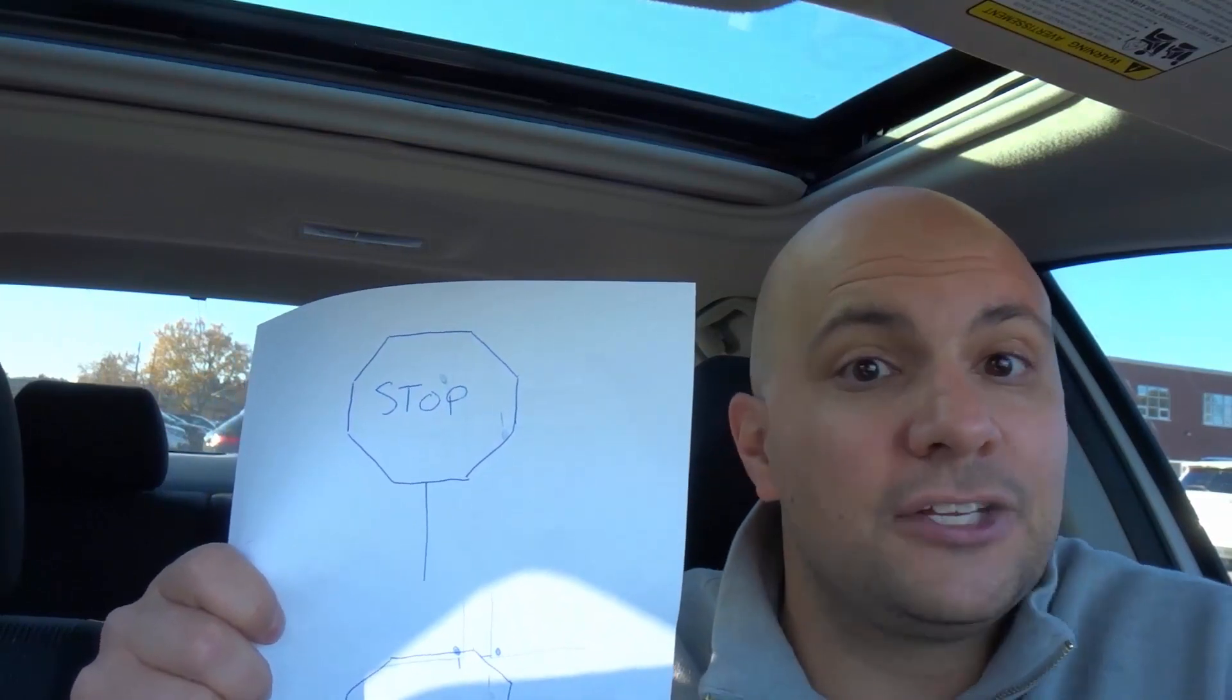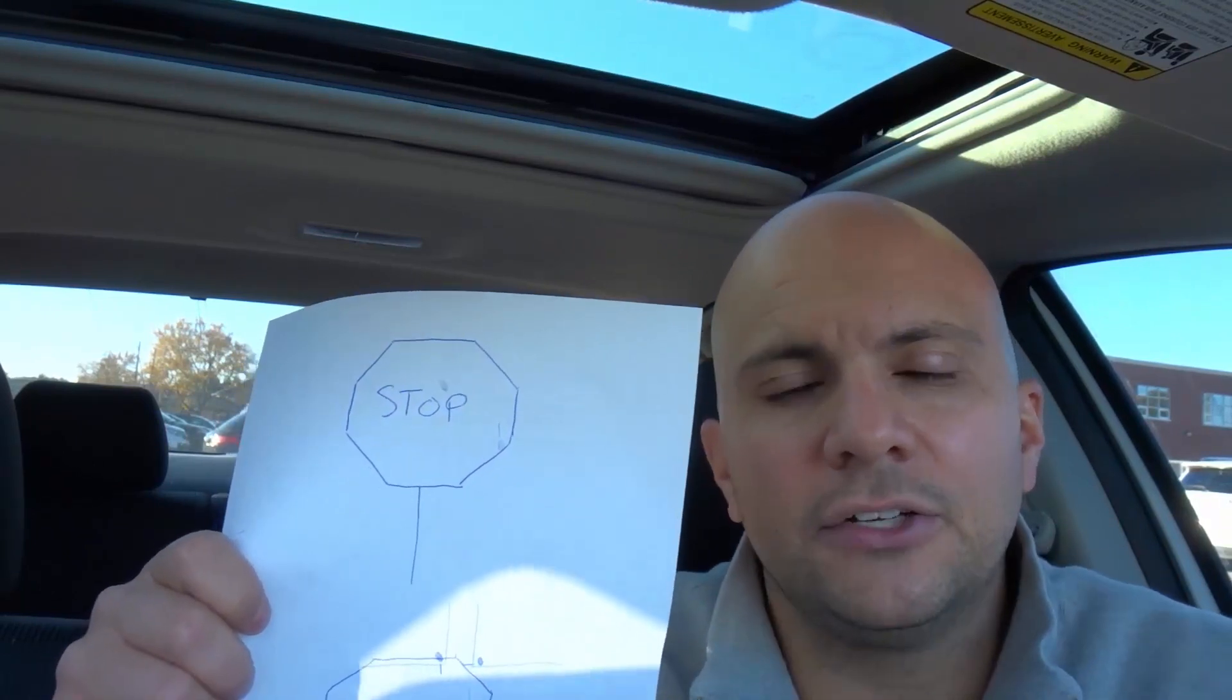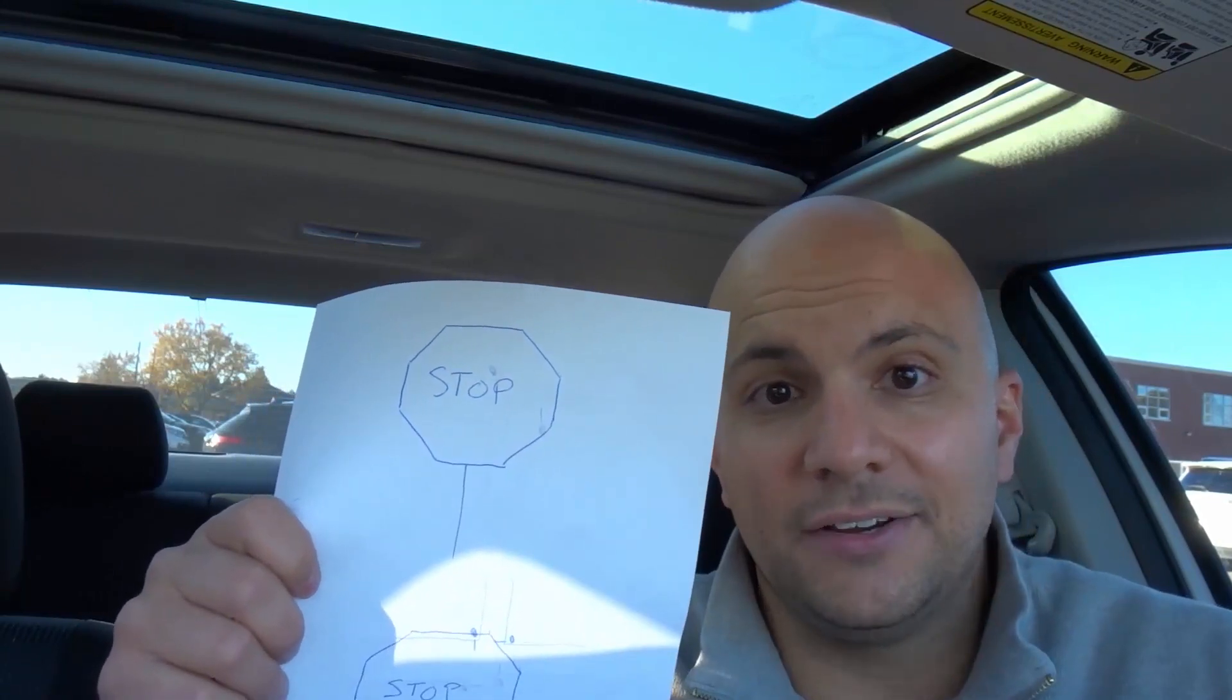So the first type of stop sign is just like this. It's a stop sign. It just says stop. There's nothing below it. Now that means that it's a stop sign, but there's no guarantee that all of the parts of the intersection have a stop sign.